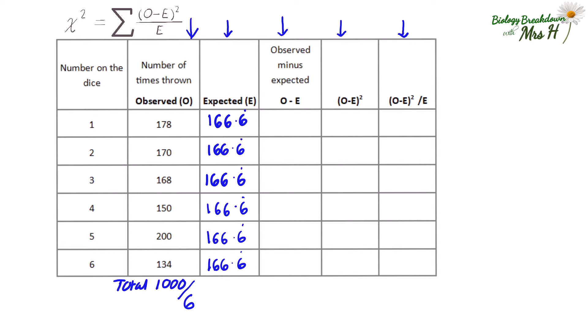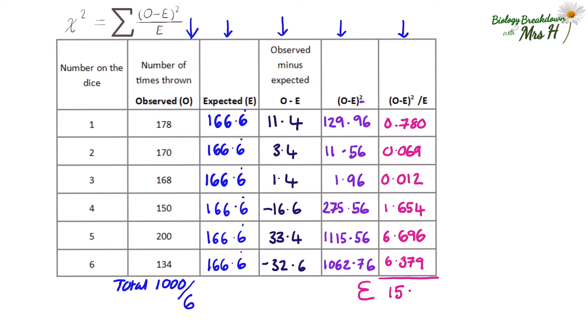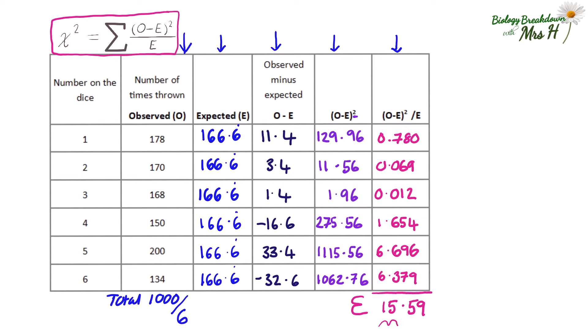In the observed minus expected column: 178 minus 166.6 recurring gives us 11.4 — then fill in the rest of the data. Next you need to square the observed minus expected value: 11.4 times itself gives you 129.96, then fill in the rest of the column. After that divide 129.96 by 166.6, which gives us 0.780, keeping figures to three decimal places for consistency. Finally, find the sum of the last column which is 15.59. This is your chi-squared value — you have now completed the formula.